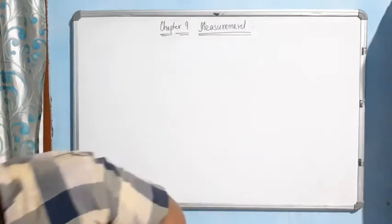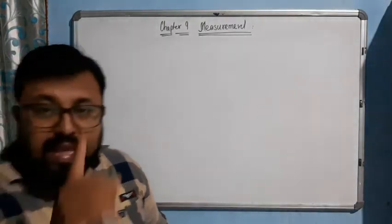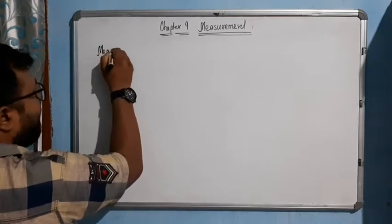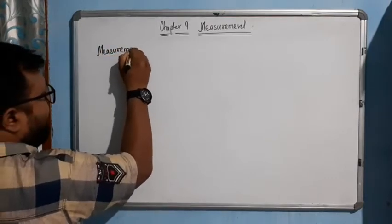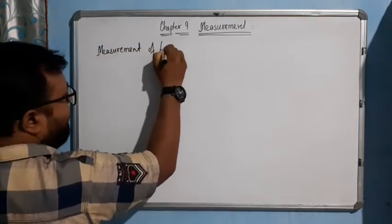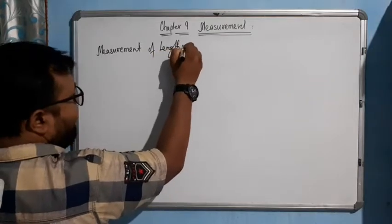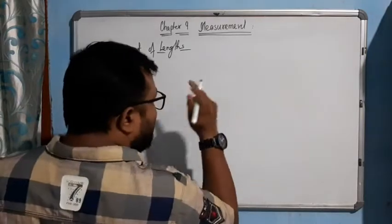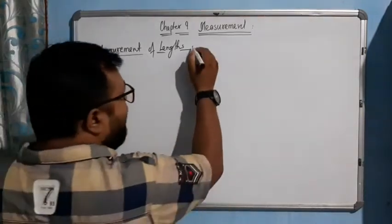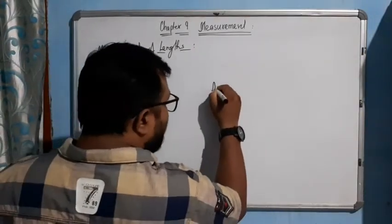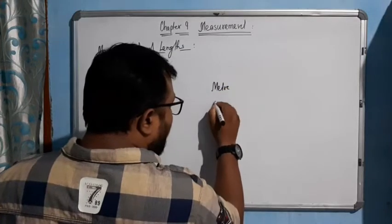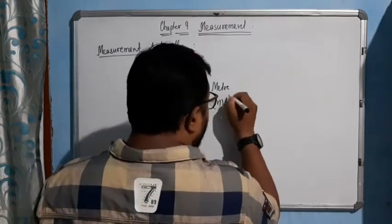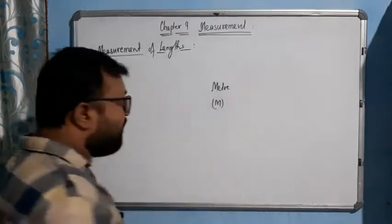Let's start with our first topic: measurement of length. The standard unit of length is the meter, represented as 'M'. Remember, the standard unit of length is meter.